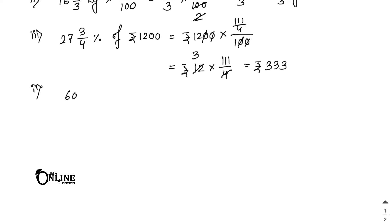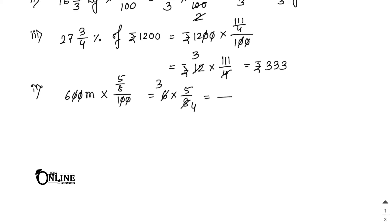Number 4: 5/8% of 600 meters. That means 600 × (5/8) / 100. The 100 cancels, then 600/8 = 75, and 75 × 5 gives... simplifying: 6 × 5 / 8 = 15/4. So the answer is 15/4 meters, which equals 3.75 meters in decimal.